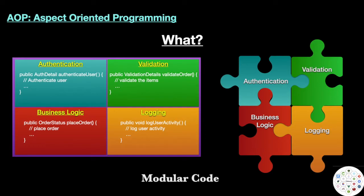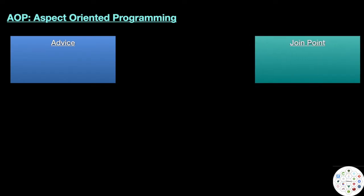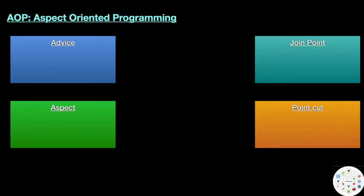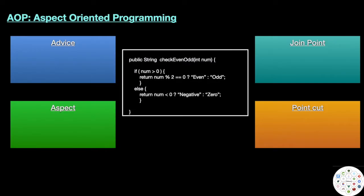Now let's talk about how and when the code will be merged, and the important concepts of AOP. The most popular concepts are: advice, join point, aspect, and point cut. There is also a target object which we will discuss later. Let's take an example to understand all four.